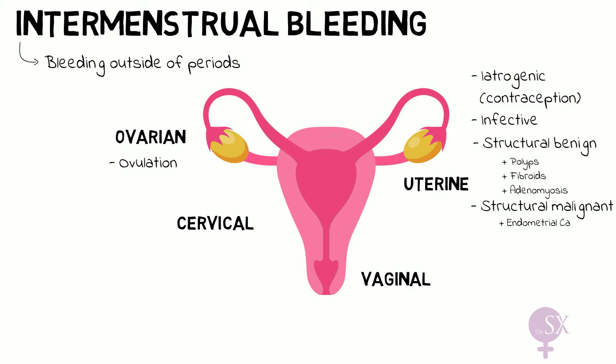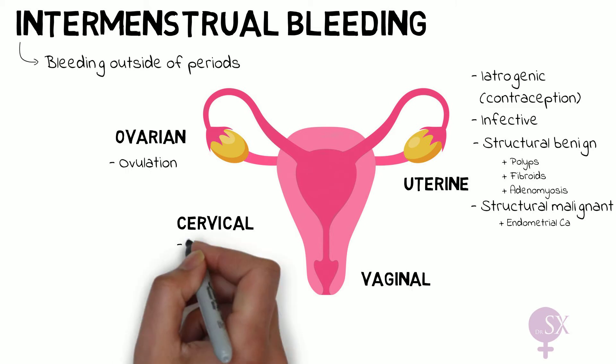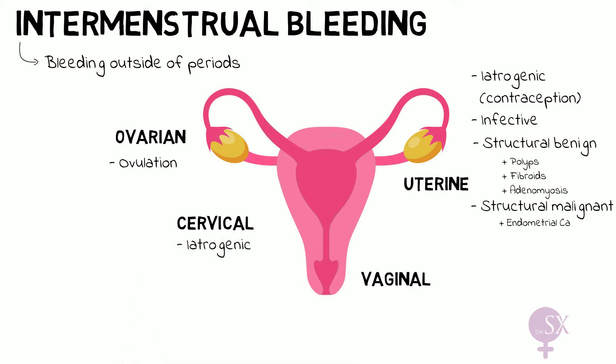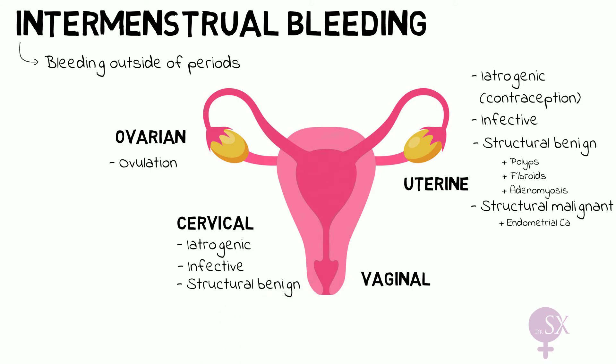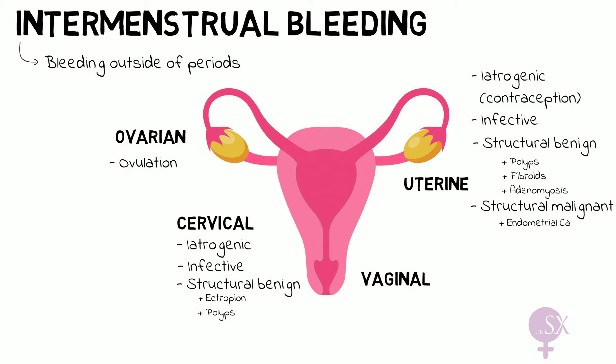Next we've got the cervical causes. Iatrogenic here refers to spotting noted after an examination or after a smear test. We have infective causes such as cervicitis. Then we've got structural benign causes including a cervical ectropion and cervical polyps.